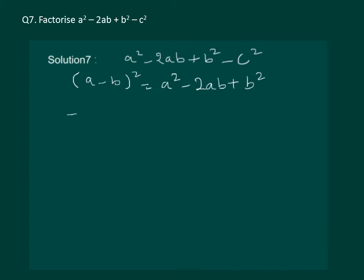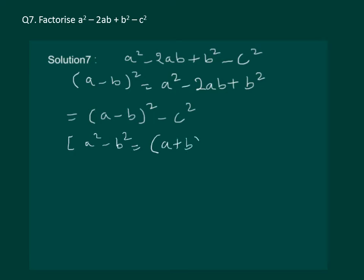So let us substitute a minus b whole square in our question instead of writing a squared minus 2ab plus b squared. Now we have this expression. Can we compare it to any of our identities? We know the identity a squared minus b squared is equal to a plus b into a minus b.